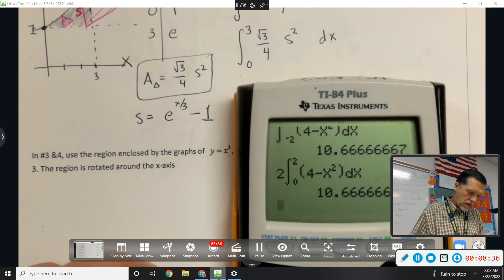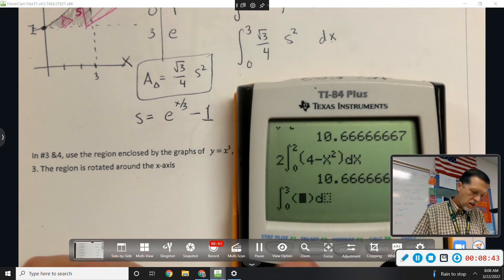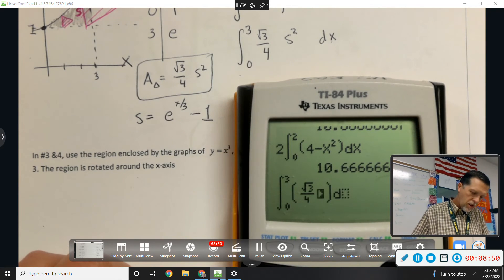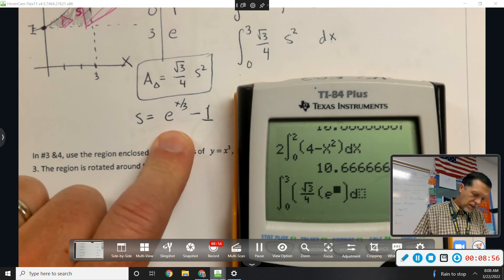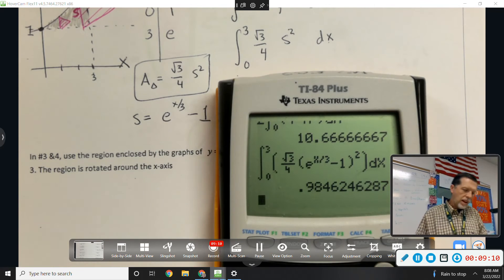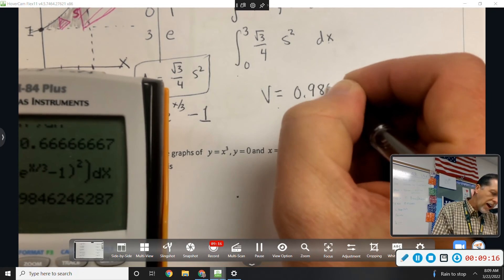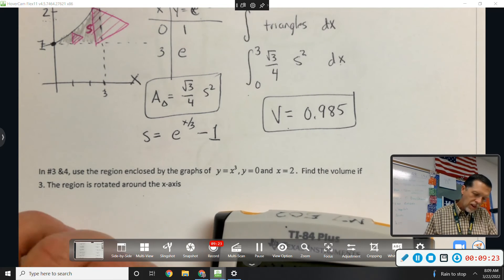Let's see. Math 9. So 0 to 3, make it look fancy with the fraction bar. Root 3 over 4, parentheses, because I need to square what s is. E to the x over 3 minus 1, squared, dx. So that volume now is 0.984, 0.985. Root 3 over 4, 0 to 3, s squared. Yeah.